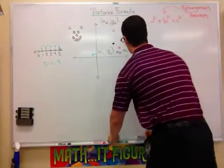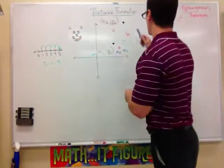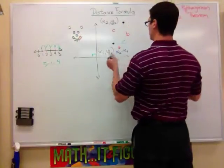As for the b, you do the exact same thing, only this time your number line is vertical. So, for b, we're going to do y2 minus y1.